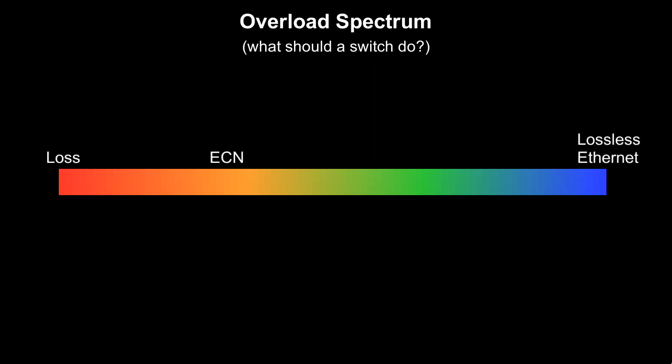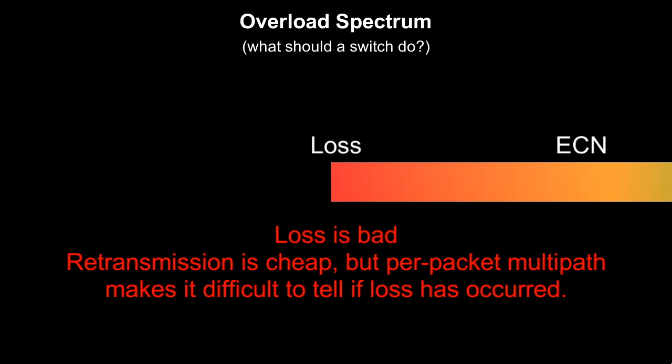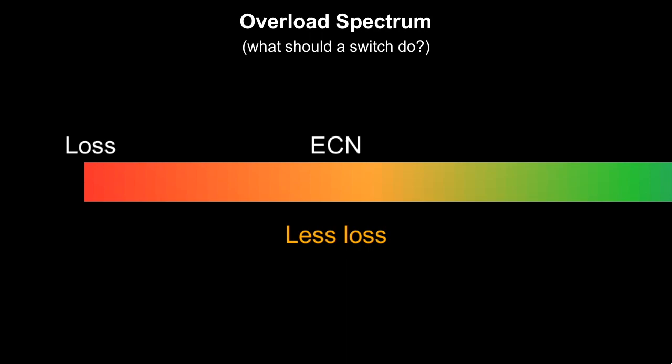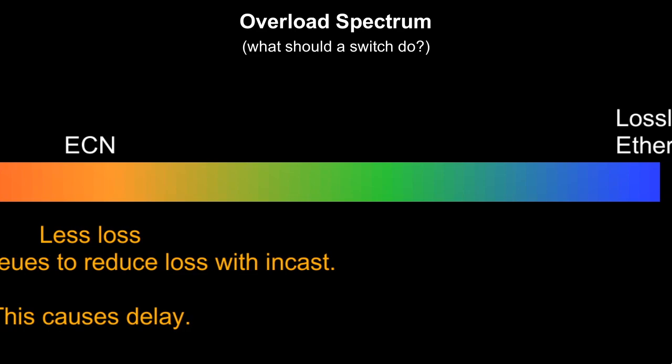What should a switch do when an outgoing link is overloaded? The default is to drop packets. Loss is bad, but not for the reason most people think. Retransmission is cheap, but loss leads to uncertainty, and this causes delay. ECN is a little better. It wouldn't really solve the incast problem though, unless you have very large buffers, which also leads to delay.